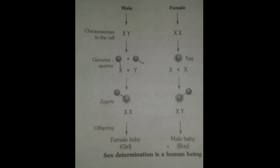When a sperm carrying an X chromosome fertilizes an egg that contains only an X chromosome, the female has two X chromosomes. If the male's X chromosome fertilizes the female's X chromosome, the zygote formed will have X and X chromosomes combined — and that will form a female baby.